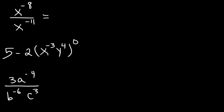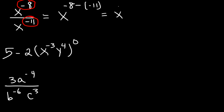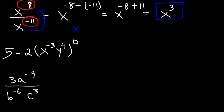So for the first one, since we're dividing, let's subtract the exponents: negative 8 and negative 11. Starting with the top one, negative 8 minus negative 11 is the same as negative 8 plus 11, and negative 8 plus 11 is positive 3. So that's the answer to the first one. Just like before, you can move it to the top — it becomes x to the negative 8 times x to the 11th, which is also x to the 3rd.